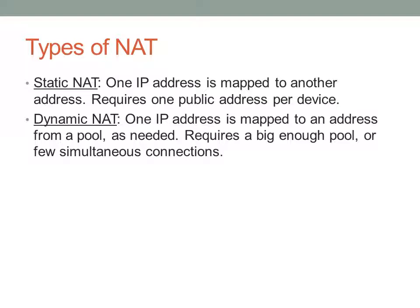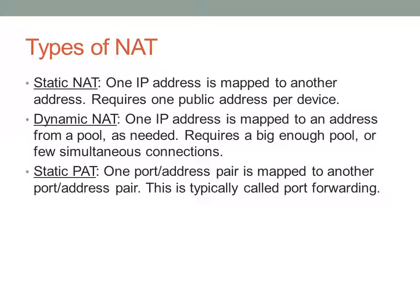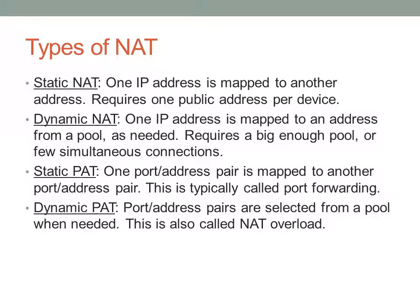The second type is Dynamic NAT, which maps an address to one of the public addresses in a pool. You need a big enough pool to support the number of simultaneous internet connections you require. Then there's PAT — Port Address Translation — which does the same thing but with individual TCP and UDP ports. Static PAT maps one address-port pair to another, and is typically called port forwarding, which you'll find on consumer routers. Dynamic PAT maps a single port address pair to a pool going outbound — this is called NAT overload — where several devices sit behind a single public address, each using a different port.